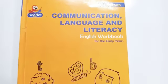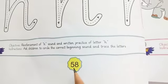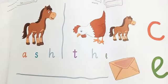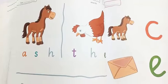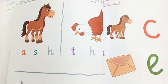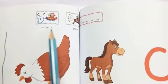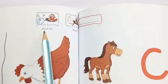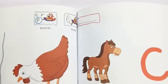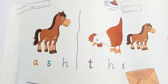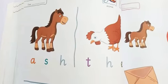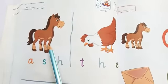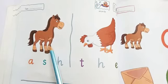take out your English workbook, open page number 58. First we recite Dua: Rabbis Idni Ilma — Oh my Lord, increase my knowledge. Instructions are: uncircle and trace. We are doing to circle the correct beginning sound.